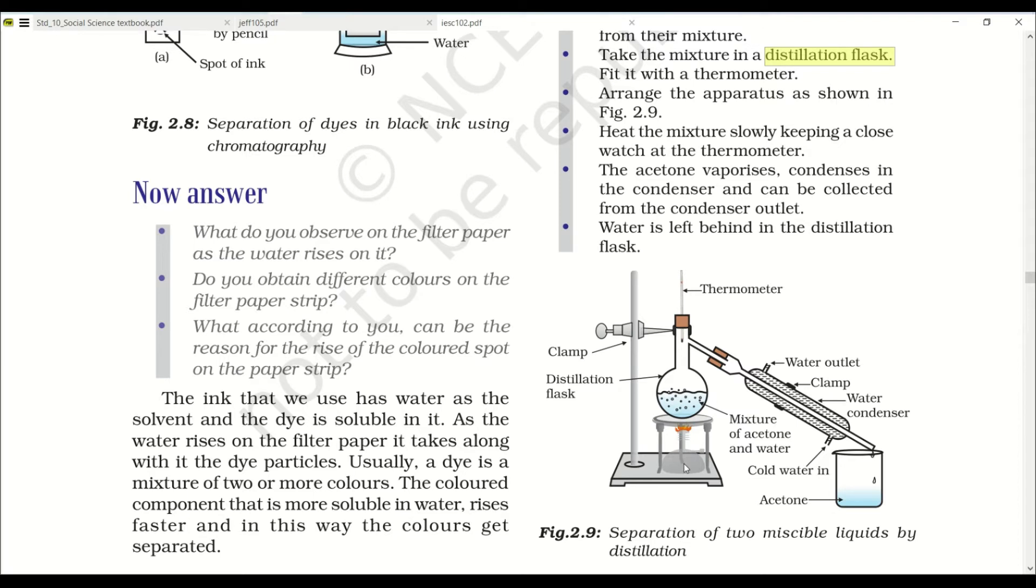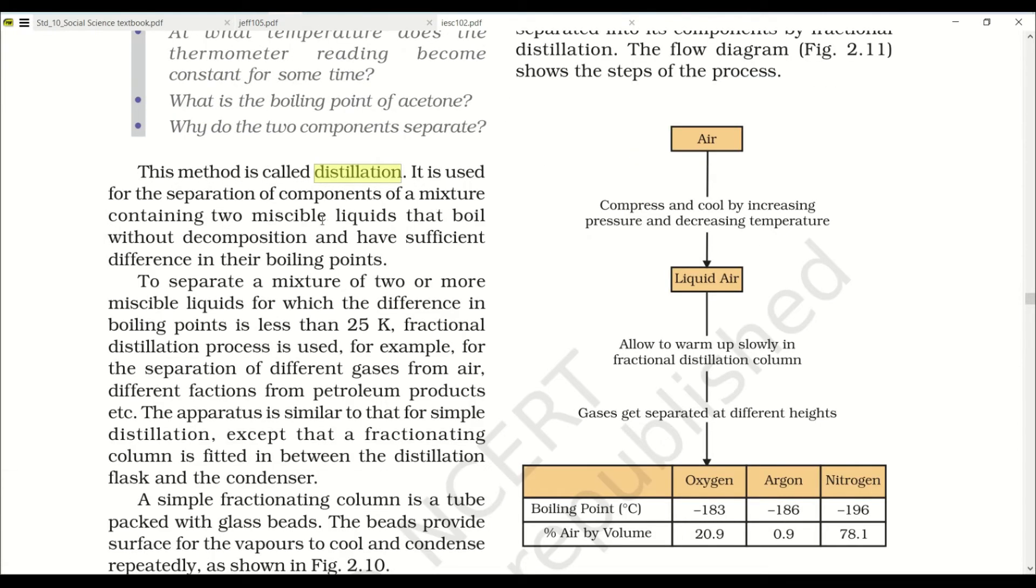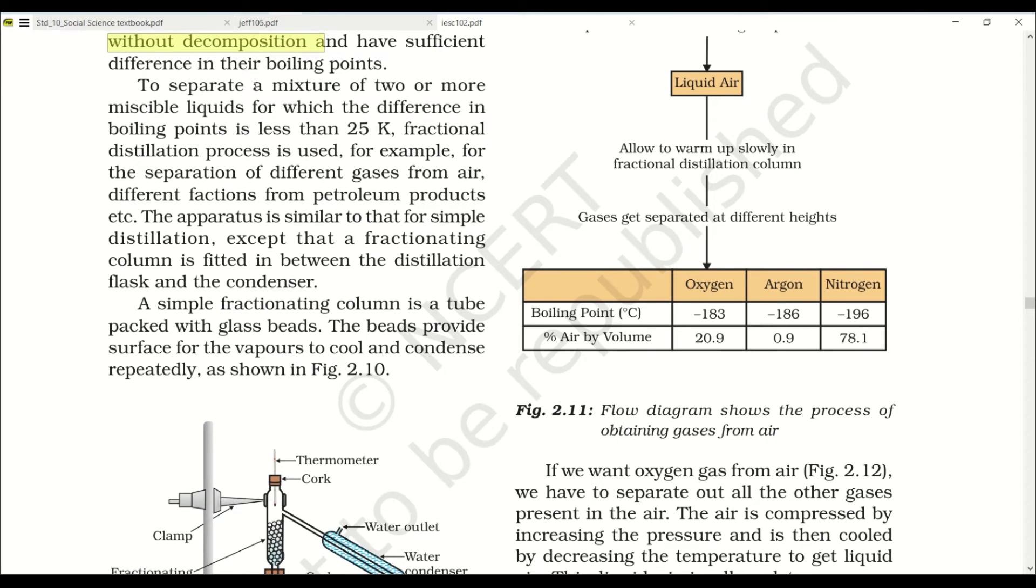Distillation is a process in which the matter with low melting point evaporates and is collected in another beaker. The matter with high boiling point remains in the same beaker. Heat the mixture slowly keeping a close watch on the thermometer. As the acetone vaporizes, it condenses in the condenser. The condenser cools out the hot vapor and again transforms the vapor into liquid. Water is left behind in the distillation flask. It is used for separation of components of mixture containing two miscible liquids that boil without decomposition and have sufficient difference in their boiling points.